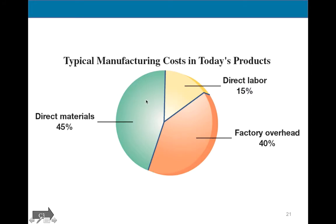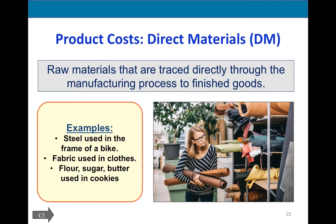Direct materials constitute about 45% of product costs for a typical company. Direct labor is decreasing due to robotics and automation, so it's not as high a percentage. Factory overhead is very significant, and one of the central problems in managerial accounting is how to assign this overhead to every specific product produced, so we can include it in the product's total cost and roll it into pricing decisions. Direct materials are raw materials traced directly through the manufacturing process to finished goods — for example, steel in a bike frame, fabric in clothes, or flour, sugar, and butter in cookies.